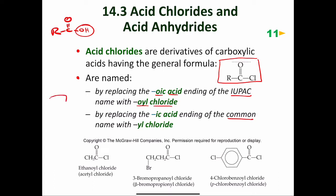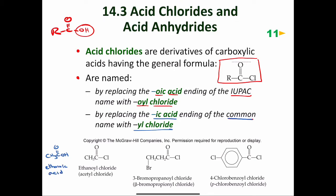For example, if you had this molecule, we would call it benzoic acid. If we changed that hydroxyl for a chlorine, we would call this benzoyl chloride. If we wanted to use common nomenclature, we would replace 'ic acid' with 'yl chloride.' So for ethanoic acid, we replace 'oic acid' with 'oyl chloride' to get ethanoyl chloride. The common name for this carboxylic acid is acetic acid, so we replace 'ic acid' with 'yl chloride' to get acetyl chloride.